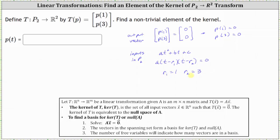So the set of polynomials in P2 such that the output will be the zero vector in R2 must be in the form of A times the quantity t minus one times the quantity t minus three. So all the scalar multiples of these two products would be the kernel of the transformation.